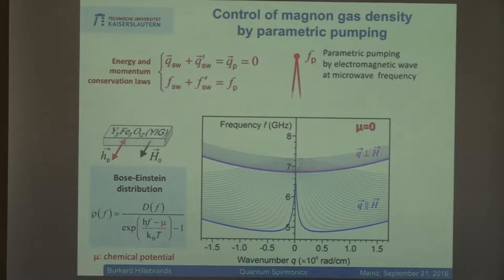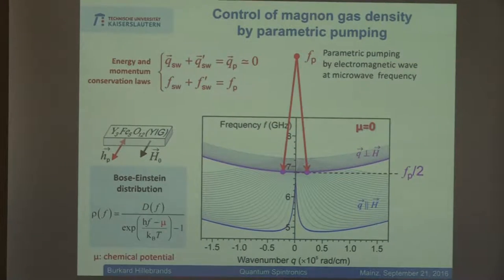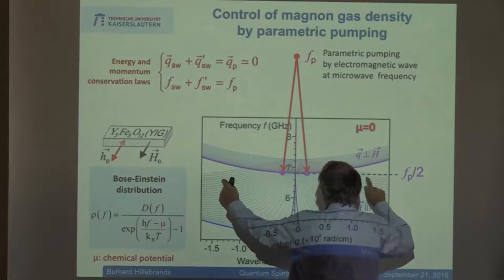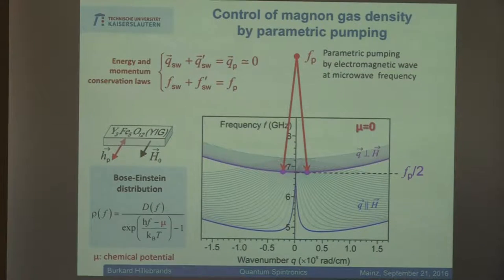The way we do it is very simple: we throw microwave photons at this frequency into the system, and the microwave photon decays into two magnons of half the photon frequency. Since the microwave photon has, on this scale, zero wave vector, these two magnons have to have opposite wave vectors — we create a pair of magnons here and there. The pair could also be created at other symmetric positions if there is sufficient density of states. The nice thing is we inject magnons via this parametric pumping at a specific position. The process of injecting magnons is very efficient, so we can really inject large quantities into the system.